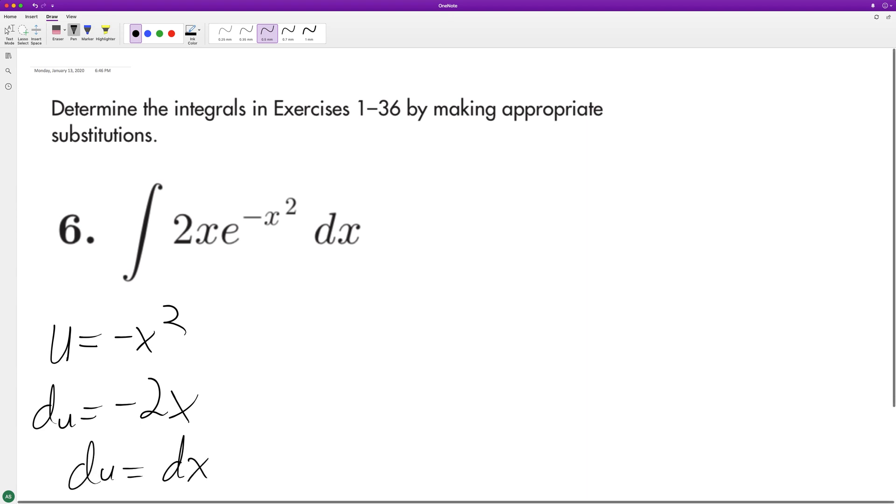multiply du by a negative value. So what we'll have here is we'll put the negative value on the outside